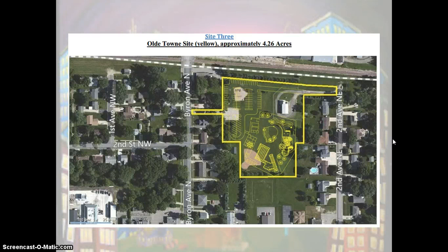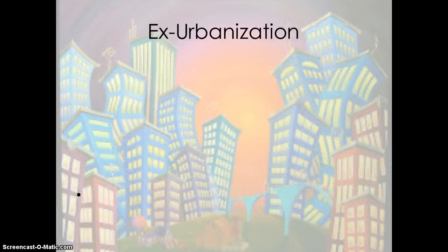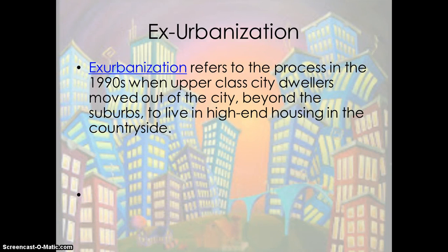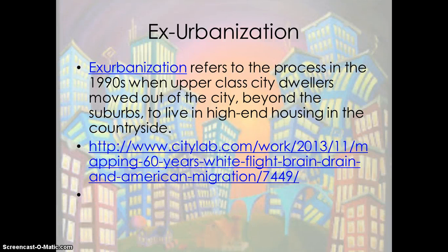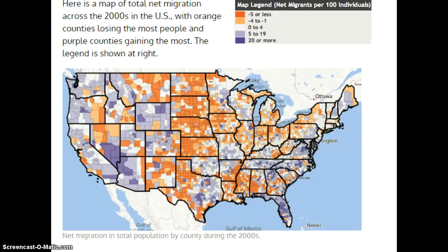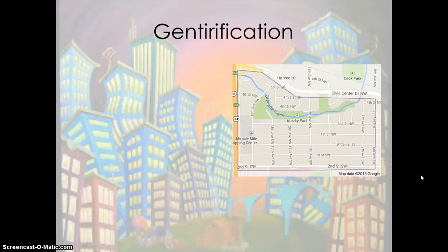As urban areas grow, we have seen the process of ex-urbanization. Ex-urbanization refers to the process in the 1990s when upper-class city dwellers moved out of cities beyond suburbs to live in high-end housing in the countryside. Ex-urbanization is a serious problem, as indicated by maps showing movement of people out of major city areas and into the countryside. As some cities begin to ex-urbanize or de-urbanize, we see the process of gentrification.